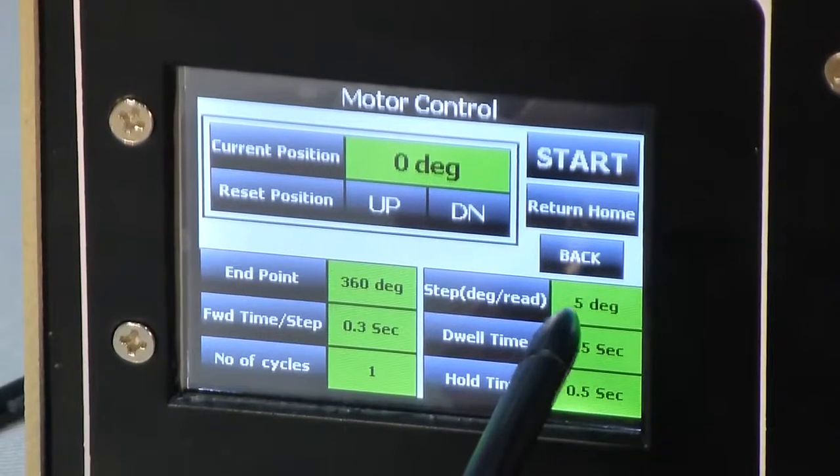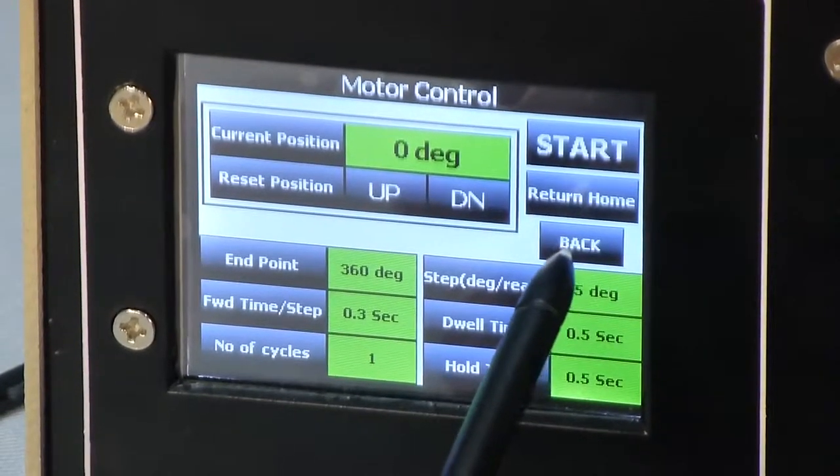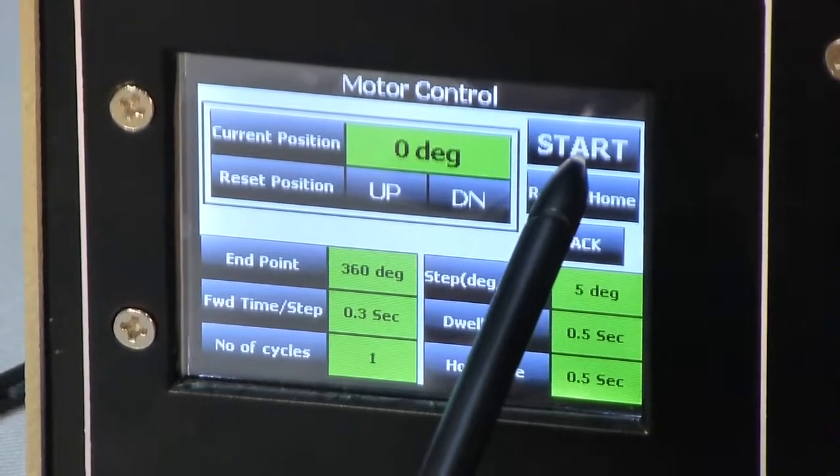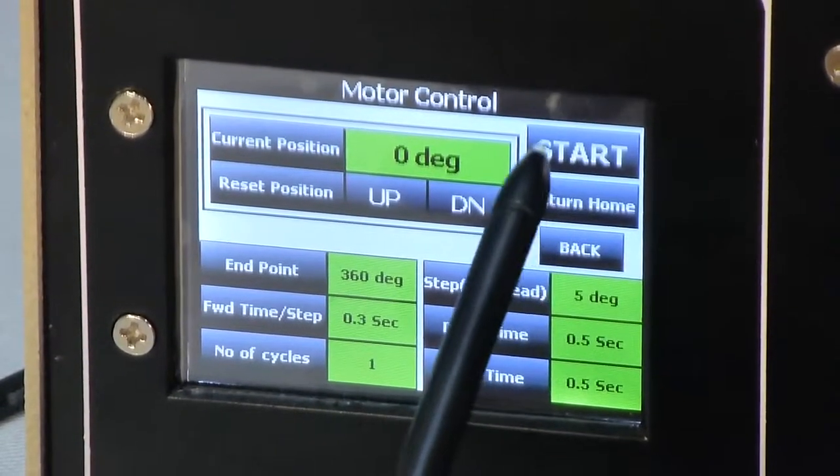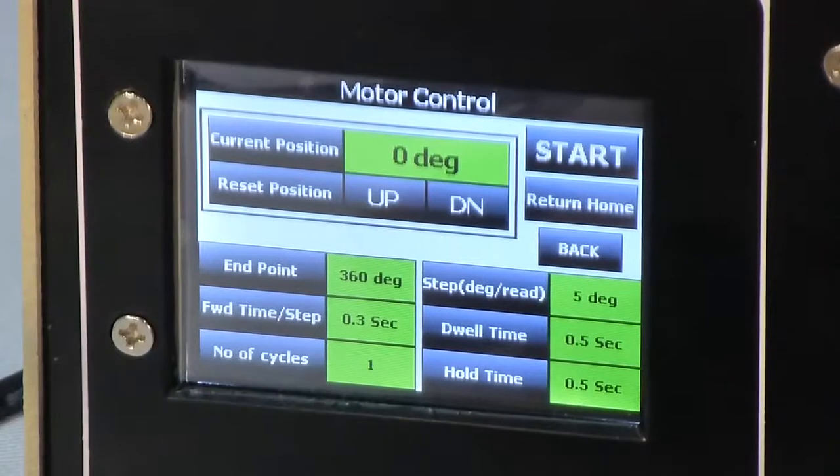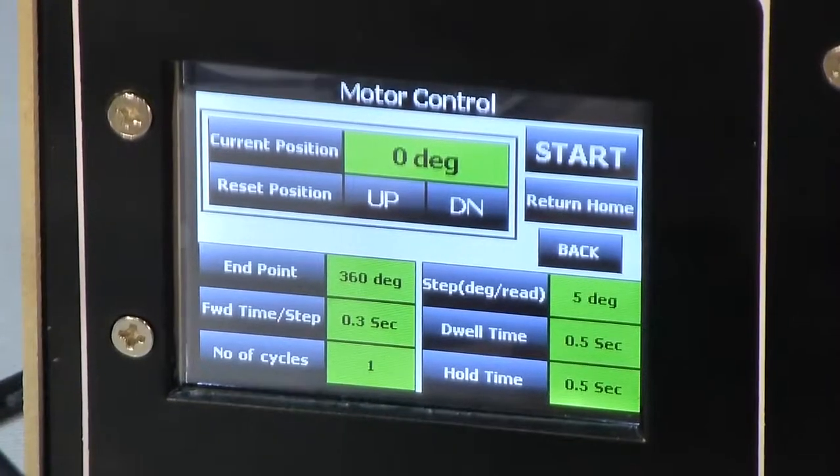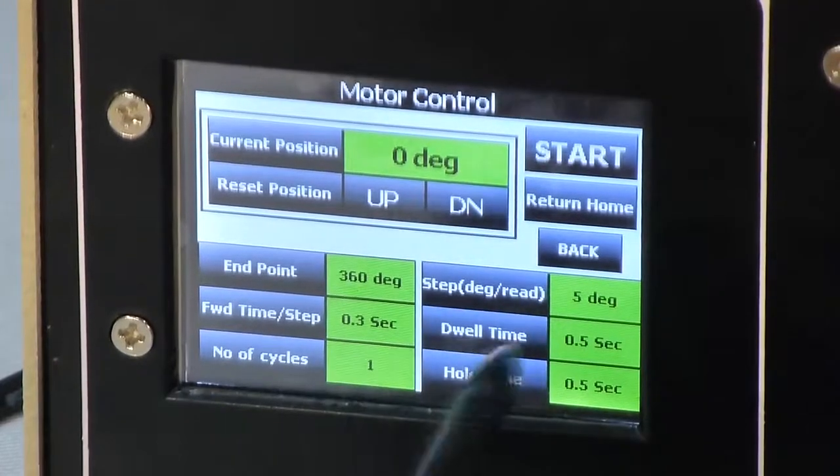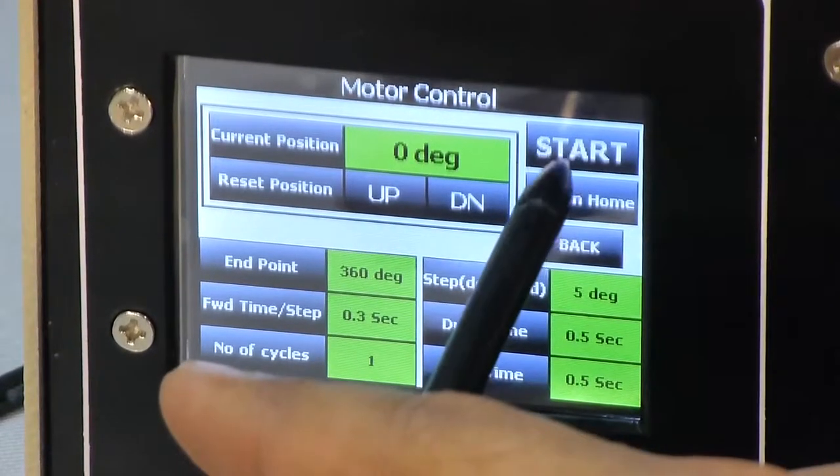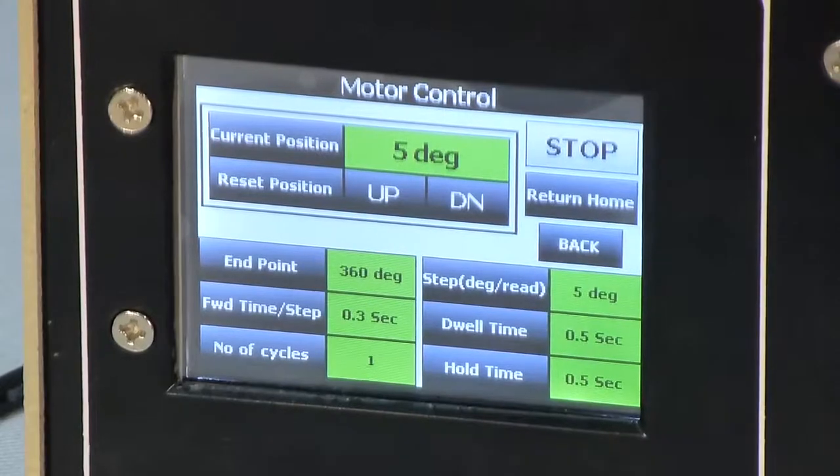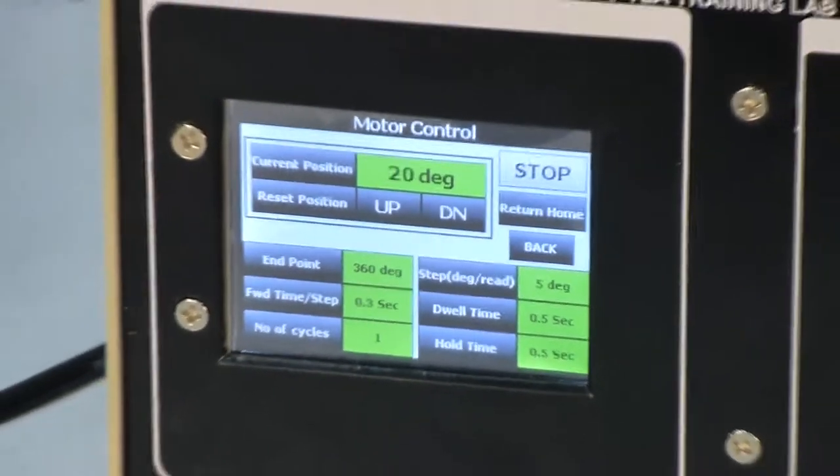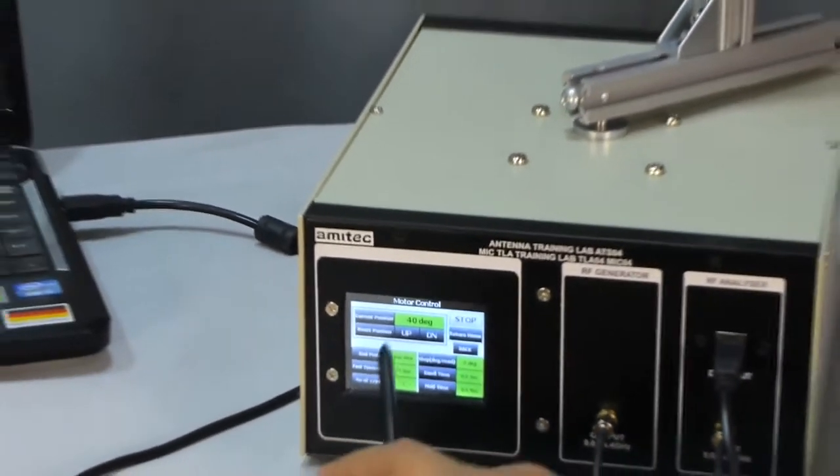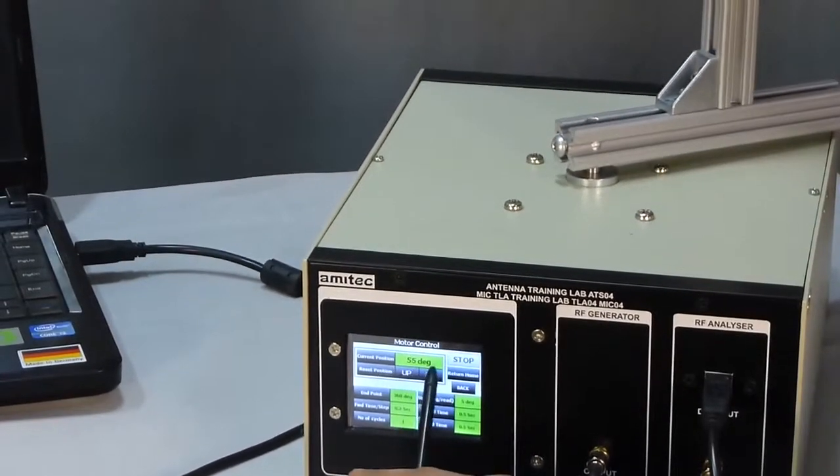As we have already activated the auto stepper option in power meter, when we start the motor, this instrument will start recording the power level of this particular antenna. Current position is shown on the current tab.